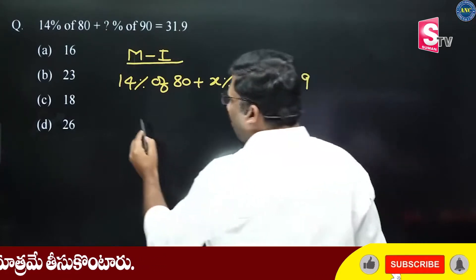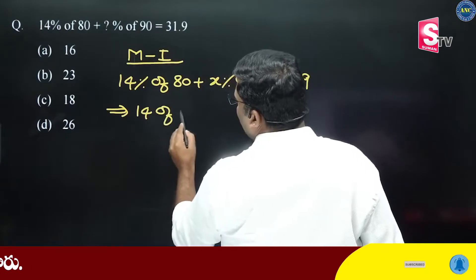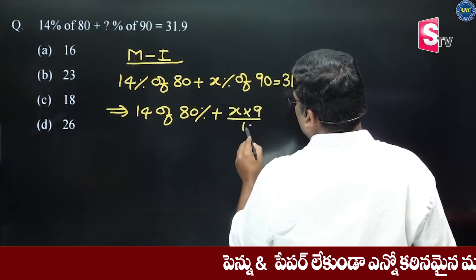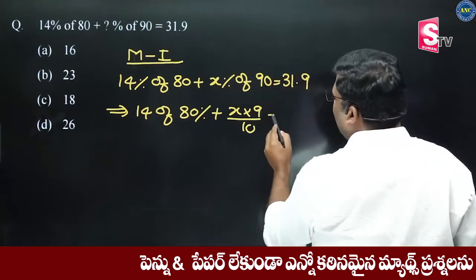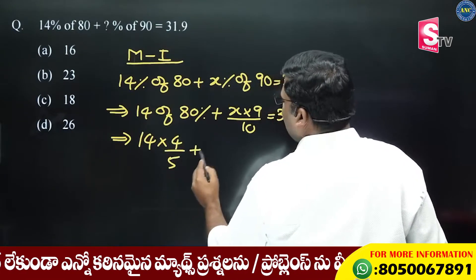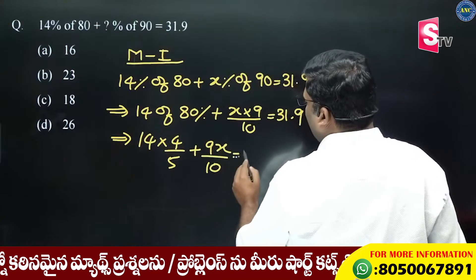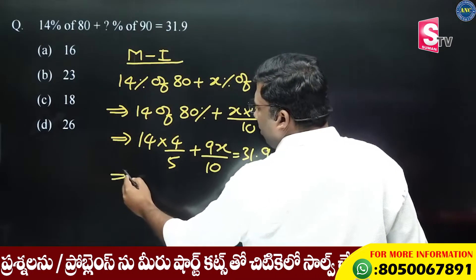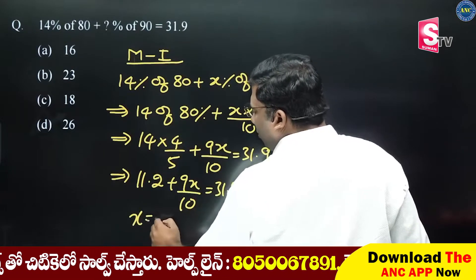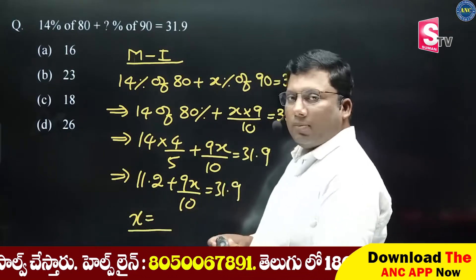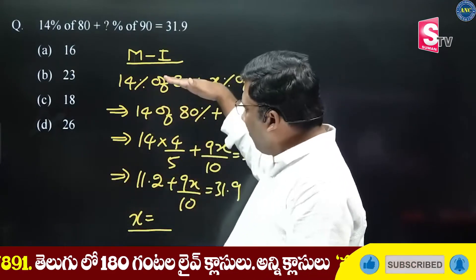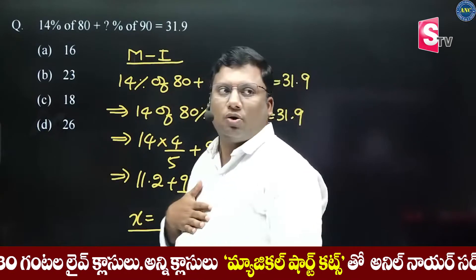If you are a teacher, it is very easy to solve. They have 14% of 80 plus x times 90 by 100, which equals 9x by 10, equivalent to 31.9. You also need to solve this problem: 14 times 80 hundredths plus 9x by 10 equals 31.9 — find the x value.